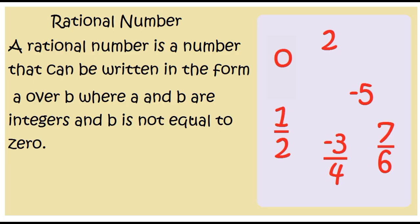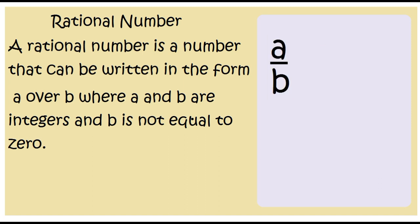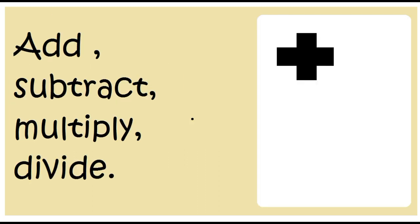A rational number is a number that can be written in the form A over B, where A and B are integers, and B is not equal to 0.